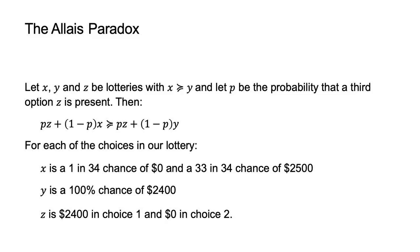I can express this in terms of the formal definition of the independence of irrelevant alternatives axiom. The formal definition states that if x and y are lotteries with x weakly preferred to y, and p is the probability that a third option z is present, then p·z + (1−p)·x is weakly preferred to p·z + (1−p)·y. For each of the choices in our lottery, x is a 1-in-34 chance of $0 and a 33-in-34 chance of $2,500; y is a 100% chance of $2,400; and z is $2,400 in choice 1 and $0 in choice 2. For any non-zero value of p, such as the 66% in both choices, the preference between x and y should not change.